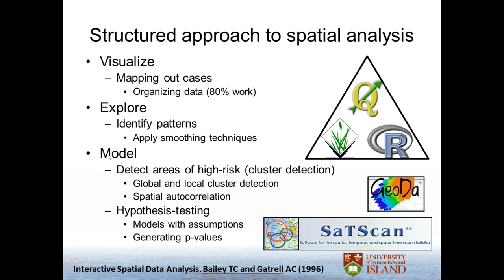Then there's the next step: modeling. That requires different sets of software — mostly R, GEODA for polygons, or SaTScan for point data cluster detection. I used SaTScan to detect the clusters in the fish example I gave earlier. There's always formal hypothesis testing involved with modeling — statistical models with assumptions and p-values. This really falls under the statistics side and is quite a lot more advanced. So you start off visualizing, then you explore, looking for patterns without formal hypothesis-driven questions, and then if you want to infer, find risk factors, or detect clusters, you use more formal models.